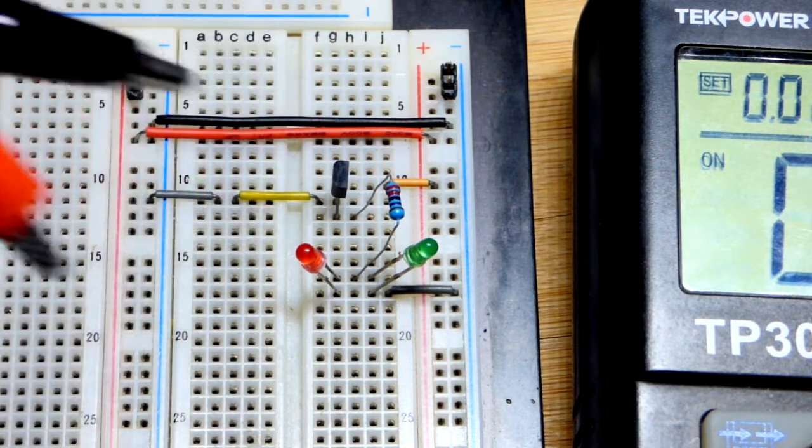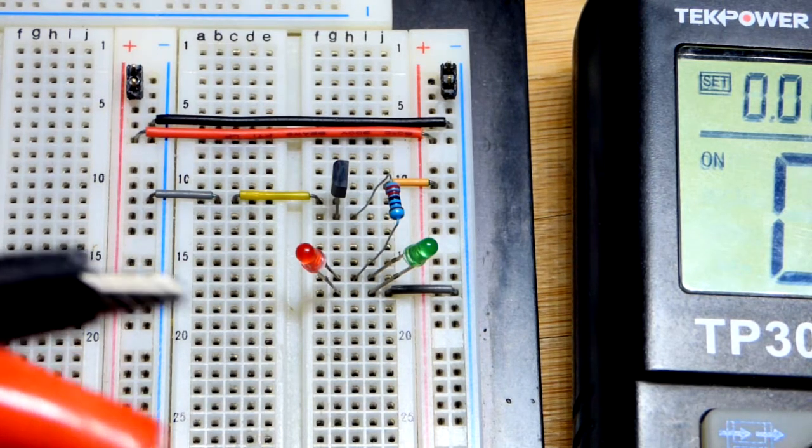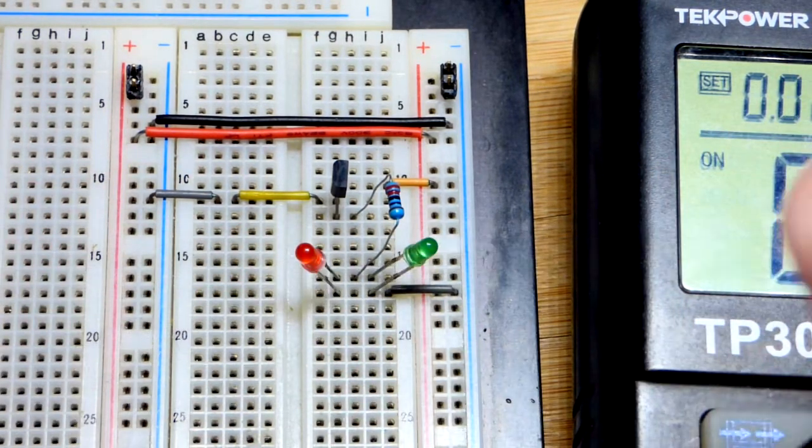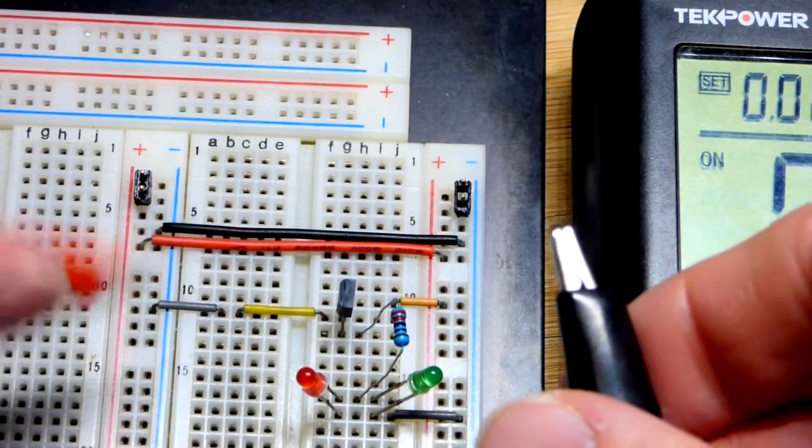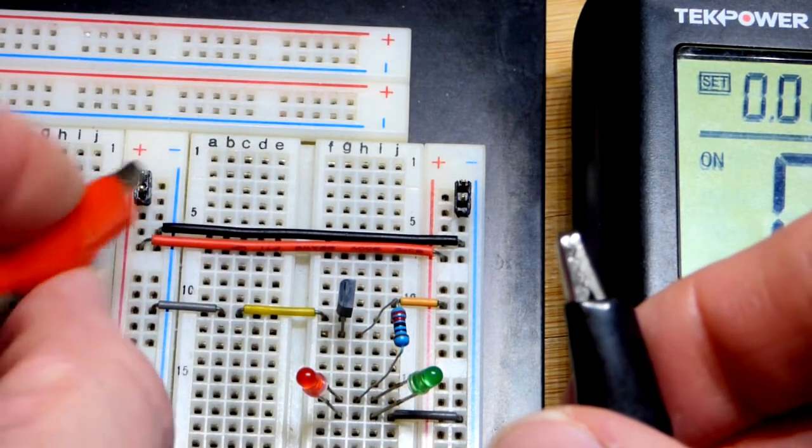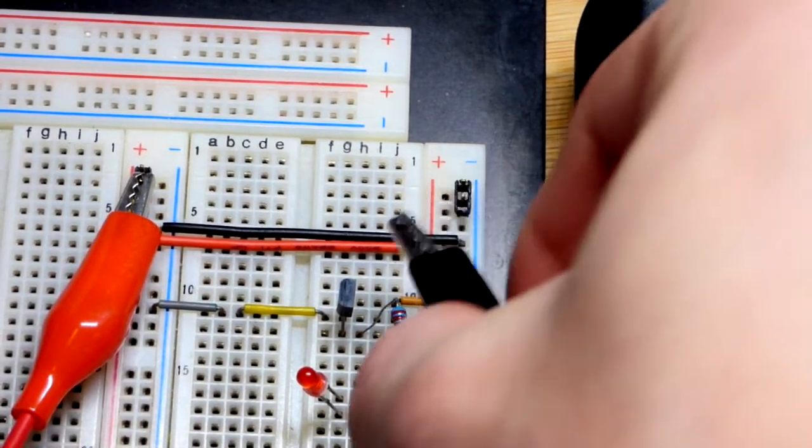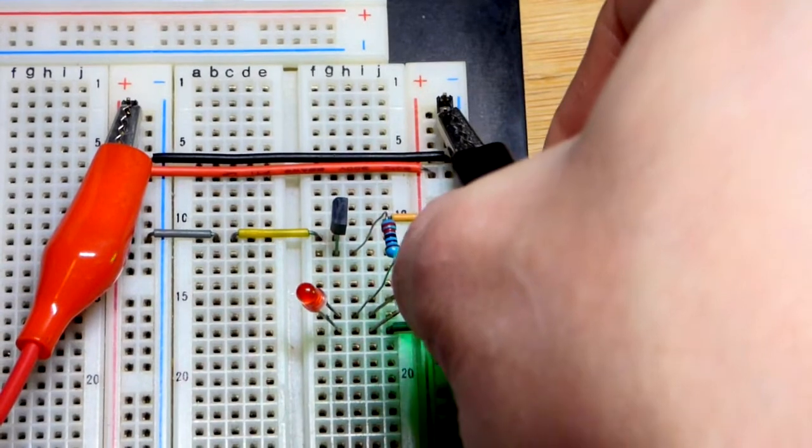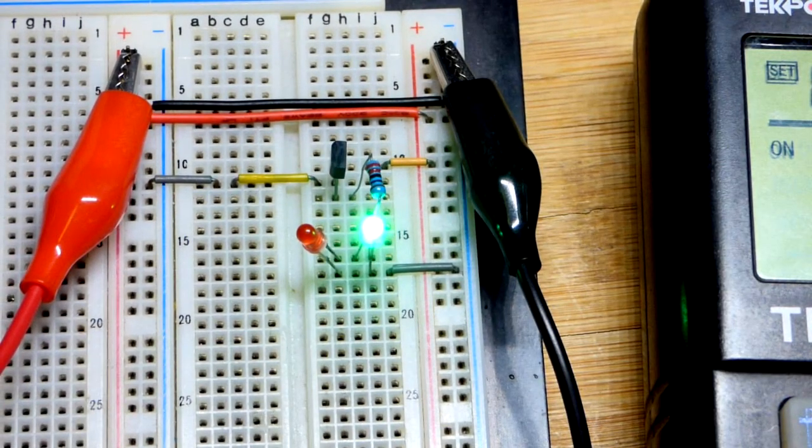For this video we wired the P-channel enhancement mode MOSFET, a BS250, as a diode—an ideal diode. It does not have a forward voltage drop. To begin with, we're going to wire it the correct way.